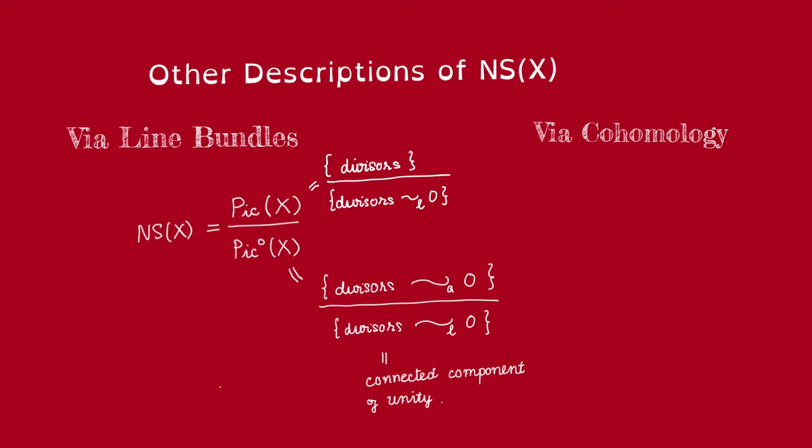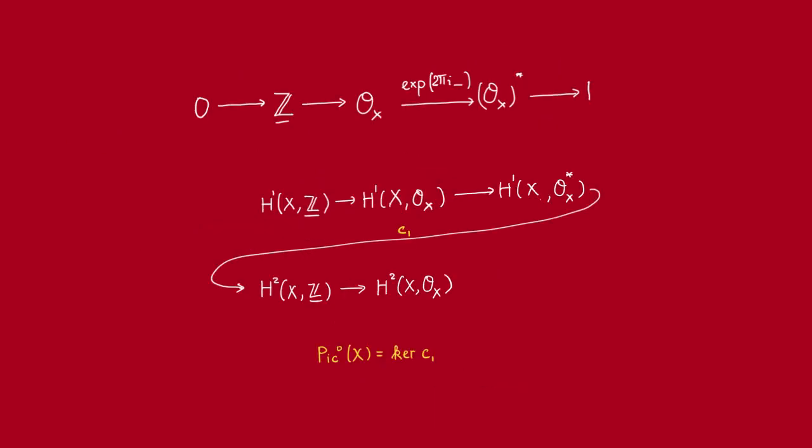As a bonus, we might as well throw in a cohomological description of the Picard group and also the Lefschetz 1-1 theorem, because all of those things are related to this exponential sequence. Remember, we discussed this exponential sequence when we defined the first Chern class.